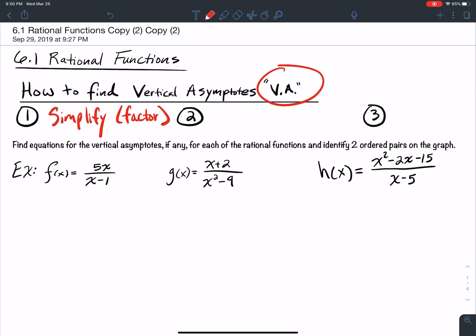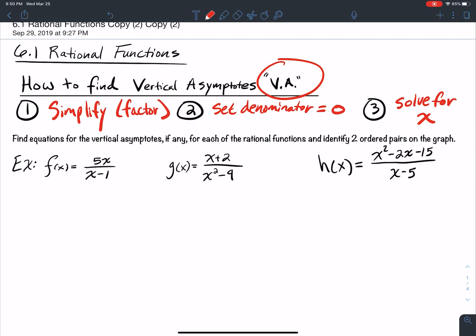The second step, number two, set the denominator equal to zero. After you simplify, then you set the denominator equal to zero. And once you do that, the third step is solve for x. When you solve for x, you'll have an equation x equals something, and whatever it is, that's your vertical asymptote.